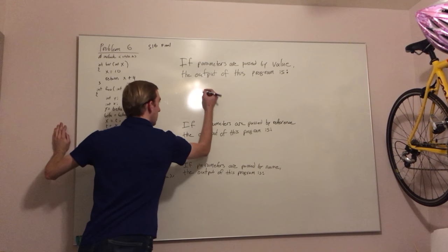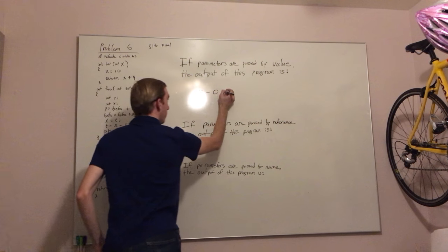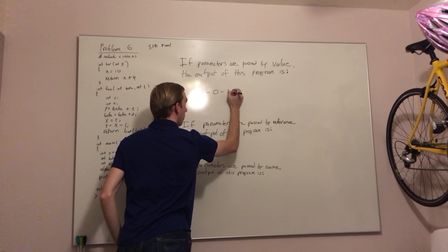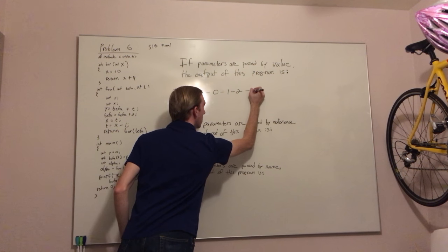This means the final output is 0 for y, 0 for beta of 0, 1 for beta of 1, and 2 for beta of 2, with 14 being alpha.